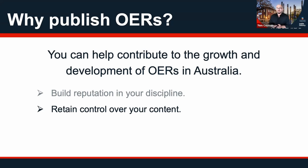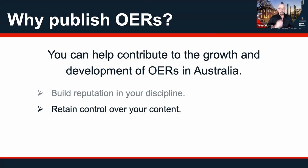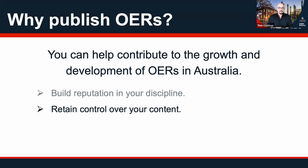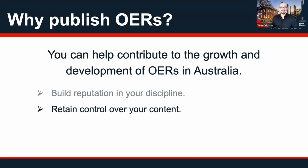Open Education Resources also often allow the academic author to retain more control over how their content is used in future and how they themselves can reuse their content again. A lot of publishing contracts that academic authors have to sign in order to publish commercial textbooks sign over most of their intellectual property rights to the publisher. There are cases where academic authors want to then publish new editions or use that content in other formats — say they want to create a video series based on their textbook — and I've been working with academic authors who actually find they can't do that because their publisher doesn't give permission, and they've already signed over their rights.